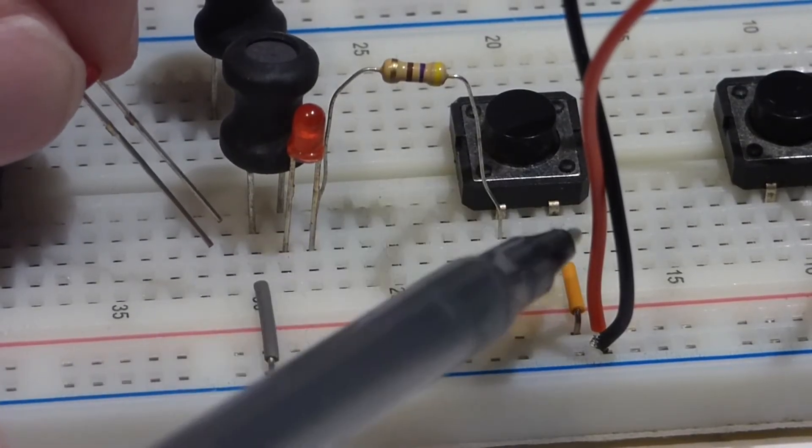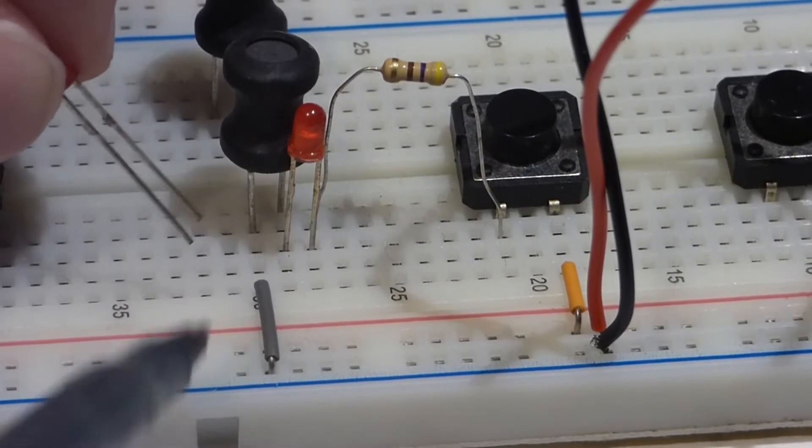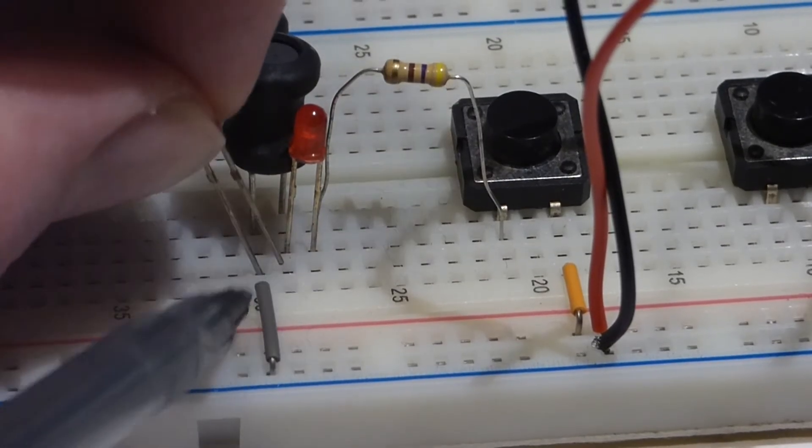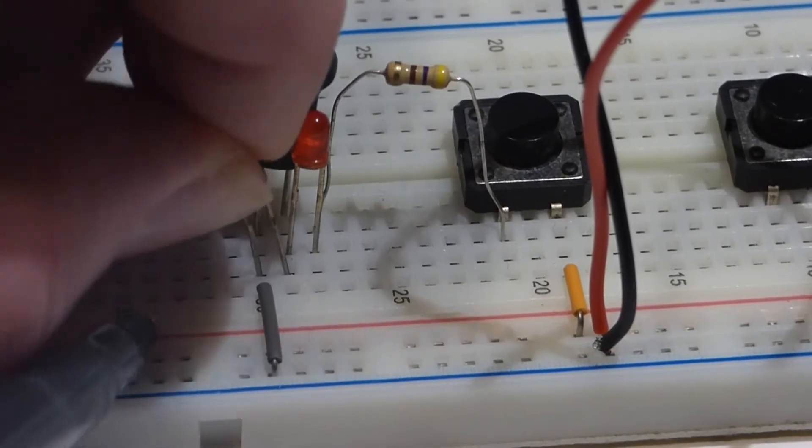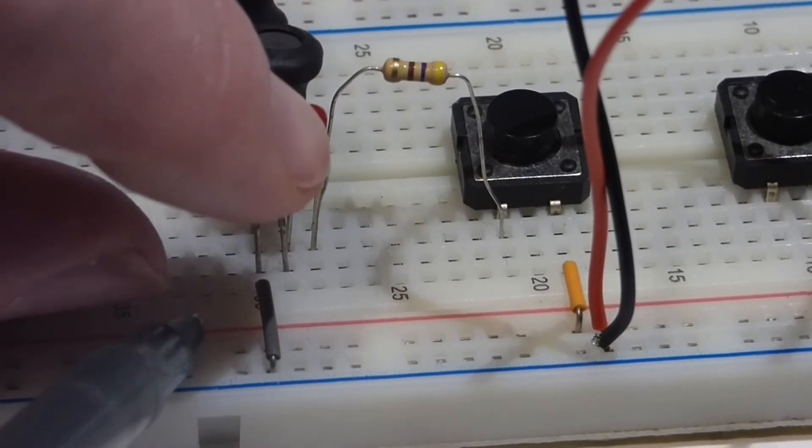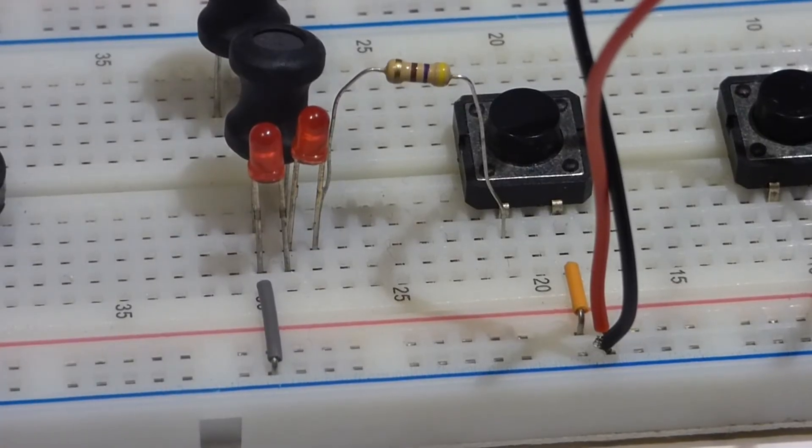Now we reverse bias it. This one, the long lead is towards positive, the short lead towards negative. Now we're going to put the long lead towards negative and the short lead towards positive. And what this will do is it will give the inductor a path to discharge.